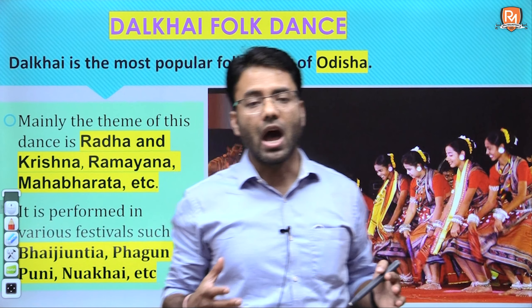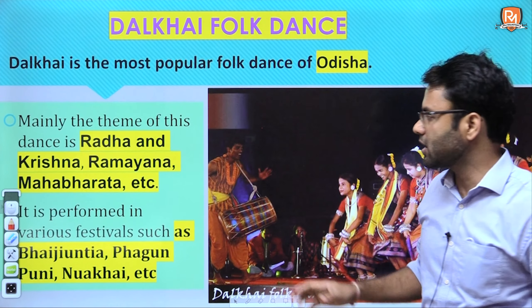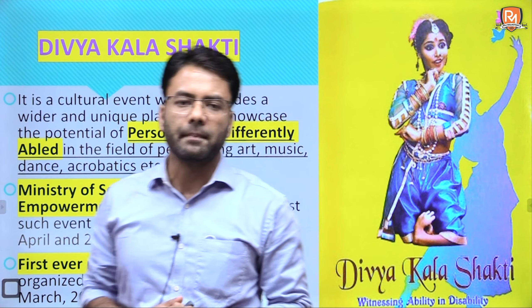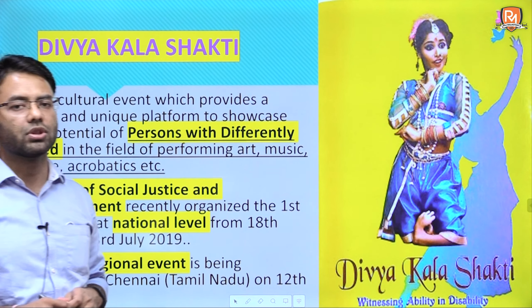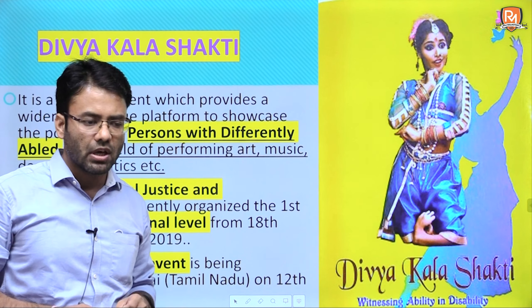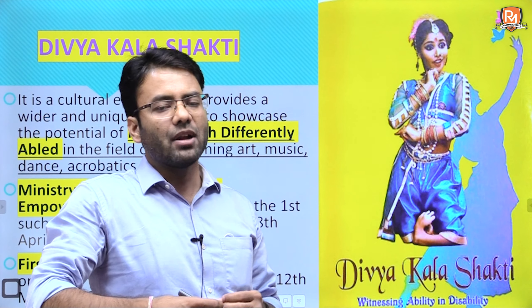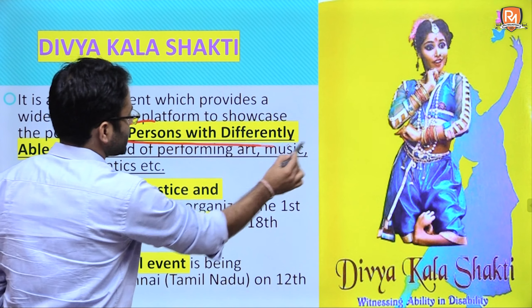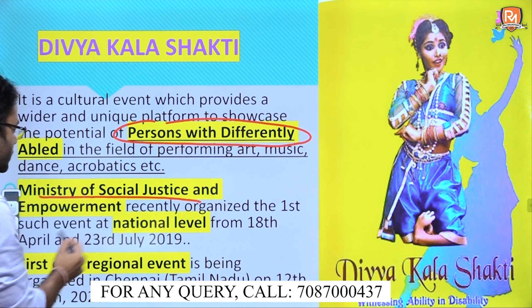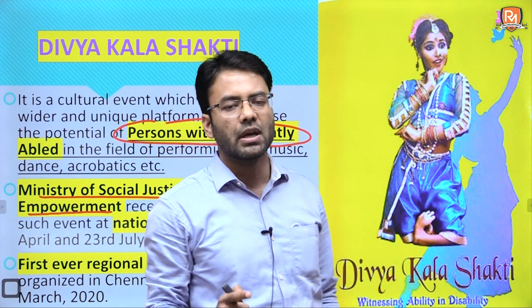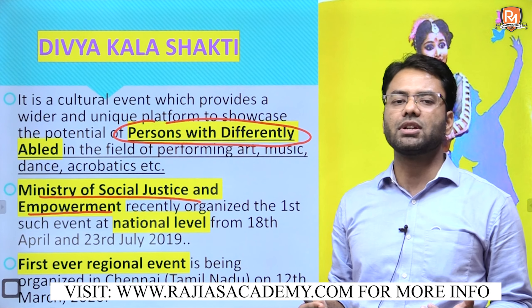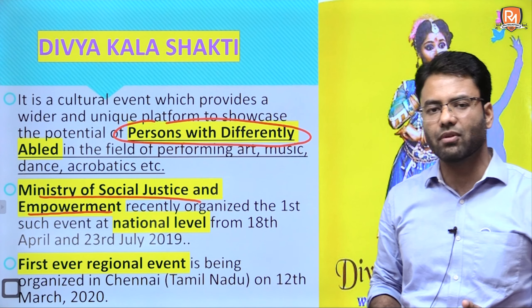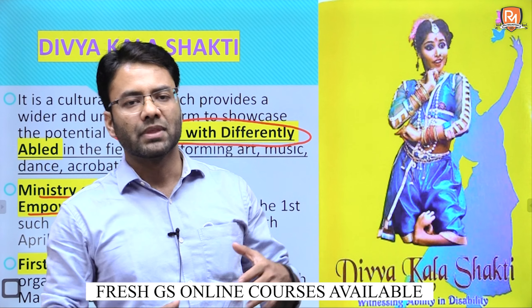Now at the national level, I am going to discuss a very nice and inspiring initiative of the Government of India called Divya Kala Shakti. Divya Kala Shakti is a new initiative of the central government to encourage and provide a platform to people with disability. This platform has been created by the Ministry of Social Justice and Empowerment. It was started in 2019 at the national level, and the first performance was done at Rashtrapati Bhavan itself as a national programme.